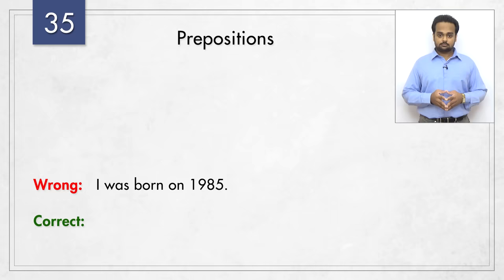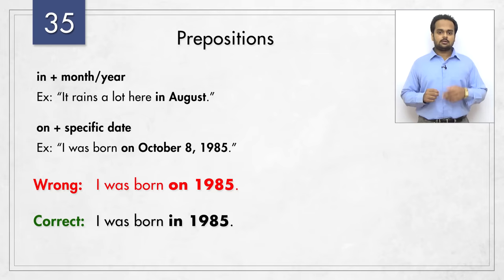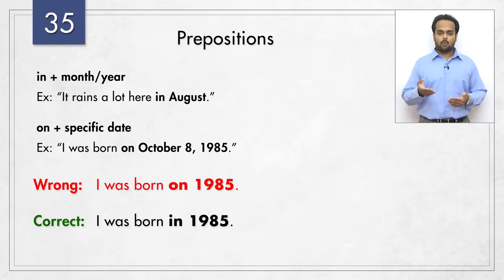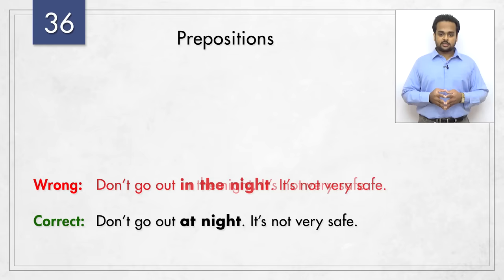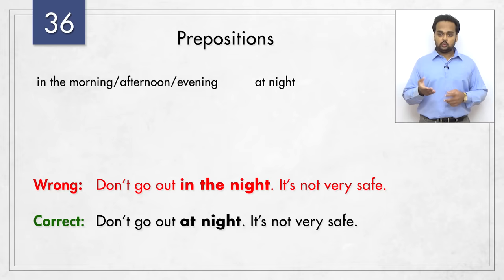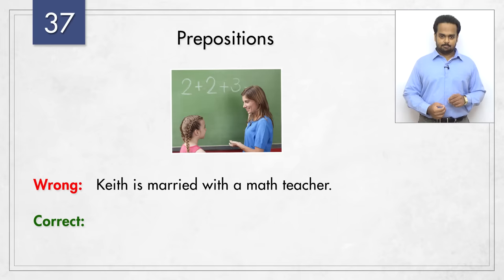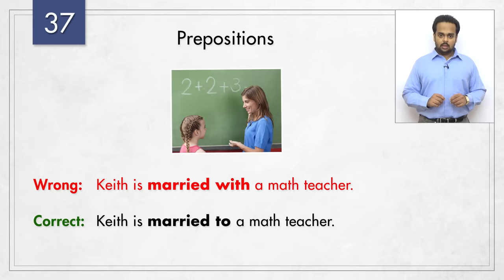Here's a similar mistake – 'I was born on 1985' should be 'I was born in 1985,' because we say 'in' with months and years. For example, 'it rains a lot here in August.' But if you mention a specific date, then say 'on' – 'I was born on October 8, 1985.' What about 'don't go out in the night, it's not very safe'? This is wrong because we have to say 'at night.' We say 'in the morning,' 'in the afternoon' and 'in the evening,' but 'at night.' Next – 'Keith is married with a math teacher' should be 'Keith is married to a math teacher.' With the verb 'marry,' we always use 'to' and not 'with.'